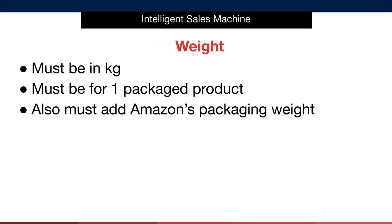Next, the weight of your item must be expressed in kilograms. If you receive the weight back in grams, convert this to kilograms by dividing by 1000. For instance, 700 grams equals 0.7 kilograms. If you are given the weight in pounds, multiply it by 0.45. For example, 2 pounds equals 0.9 kilograms.